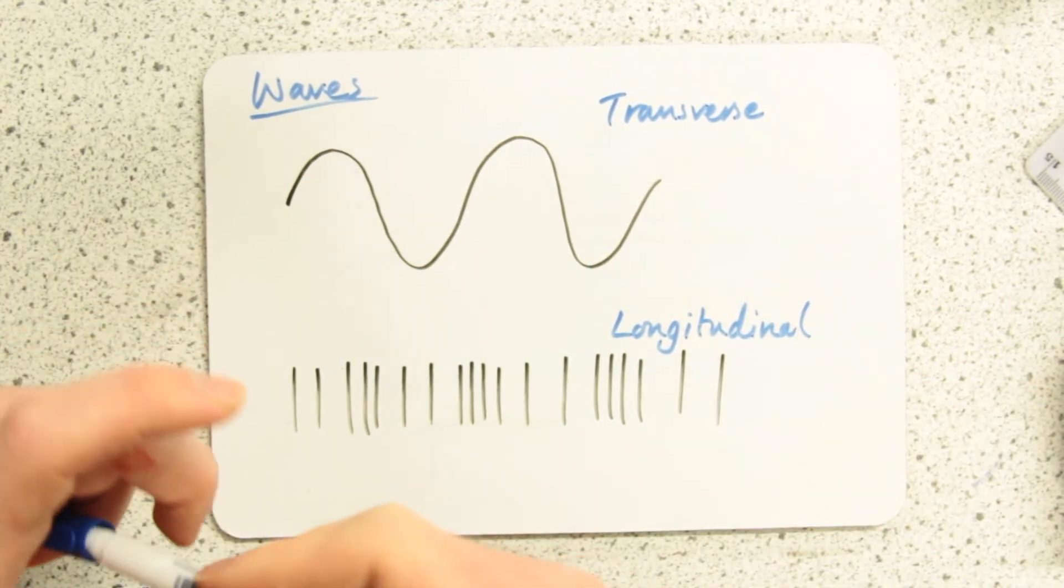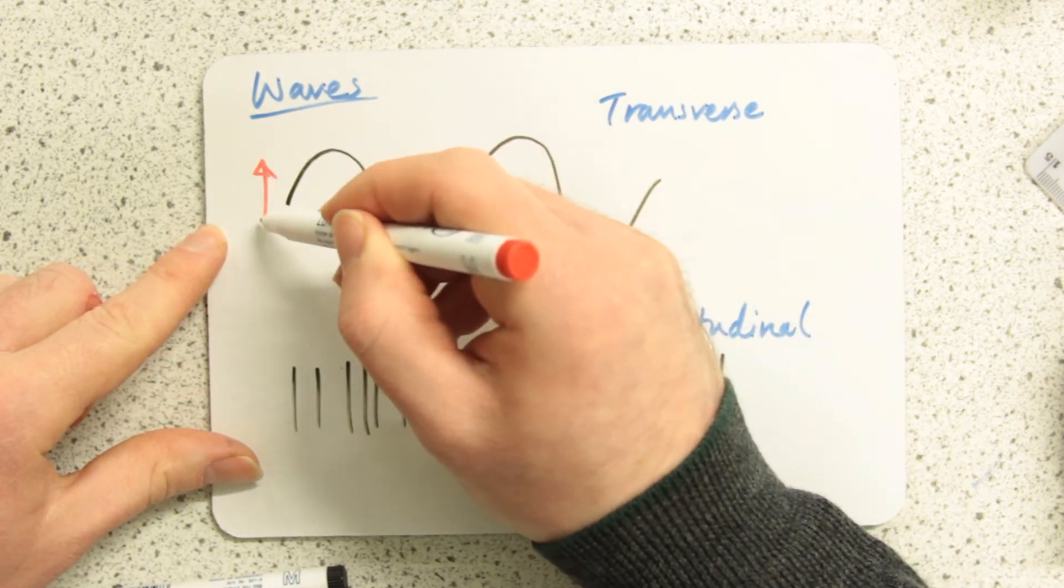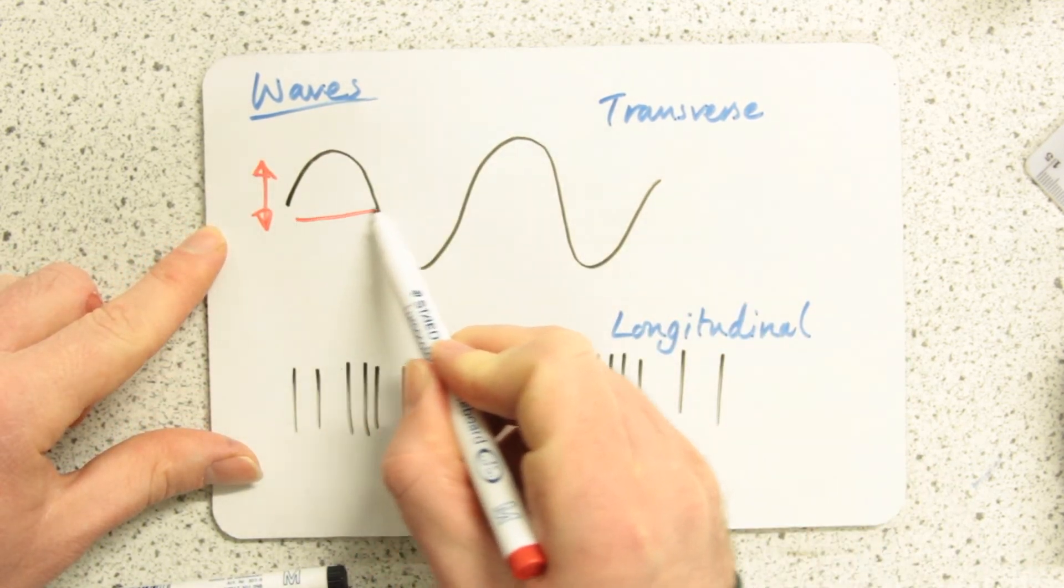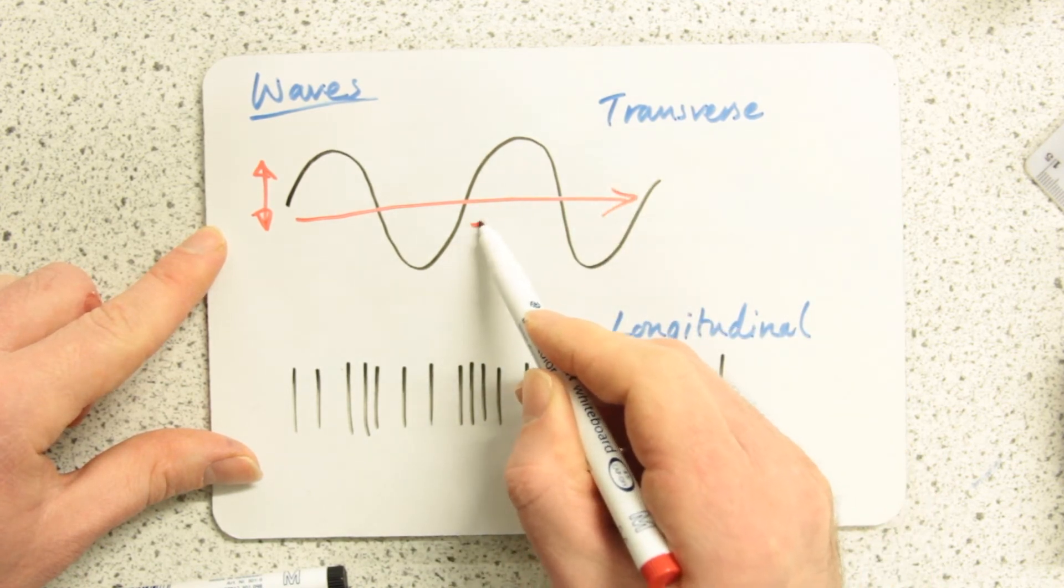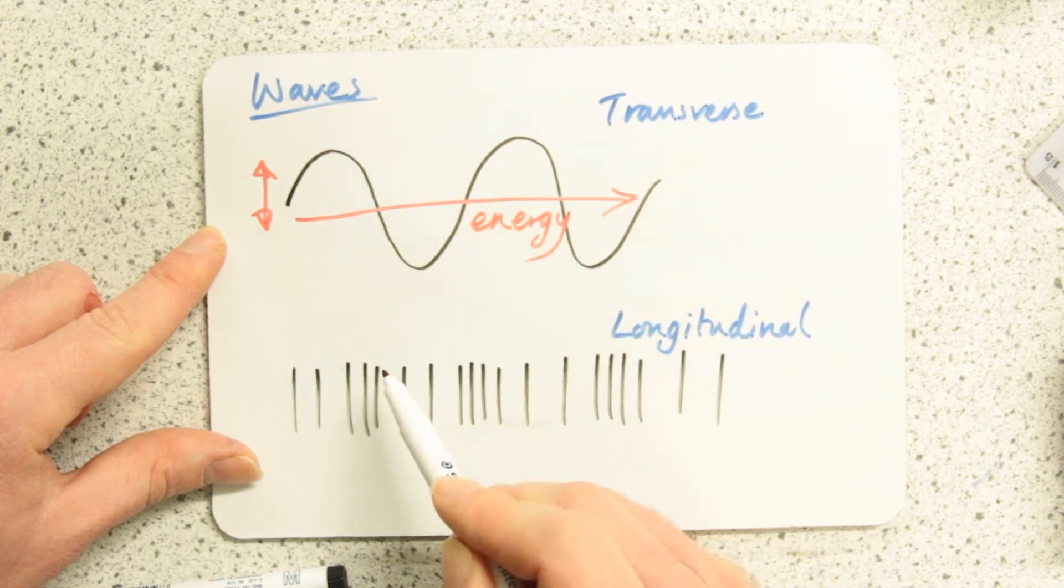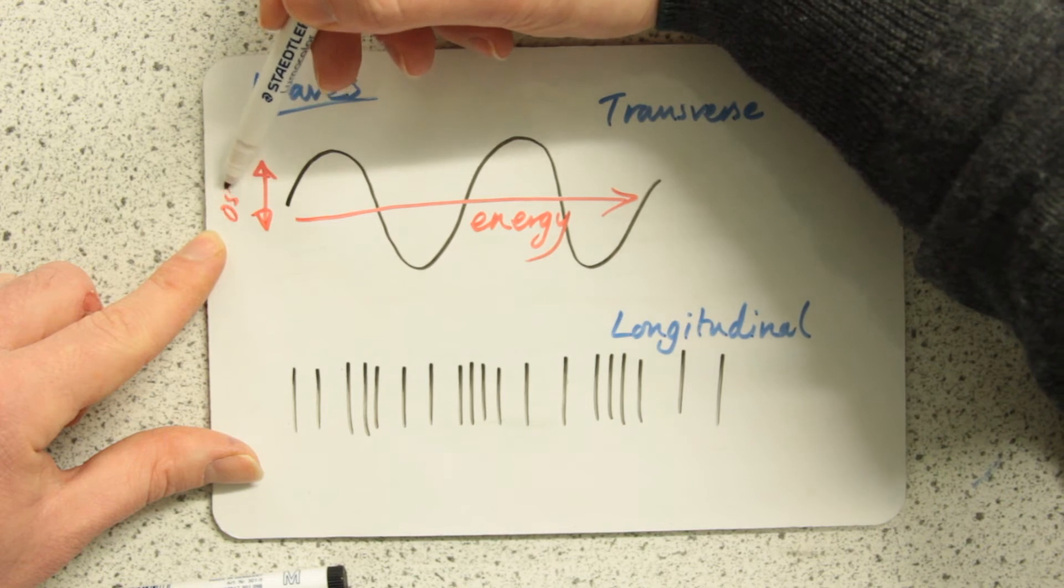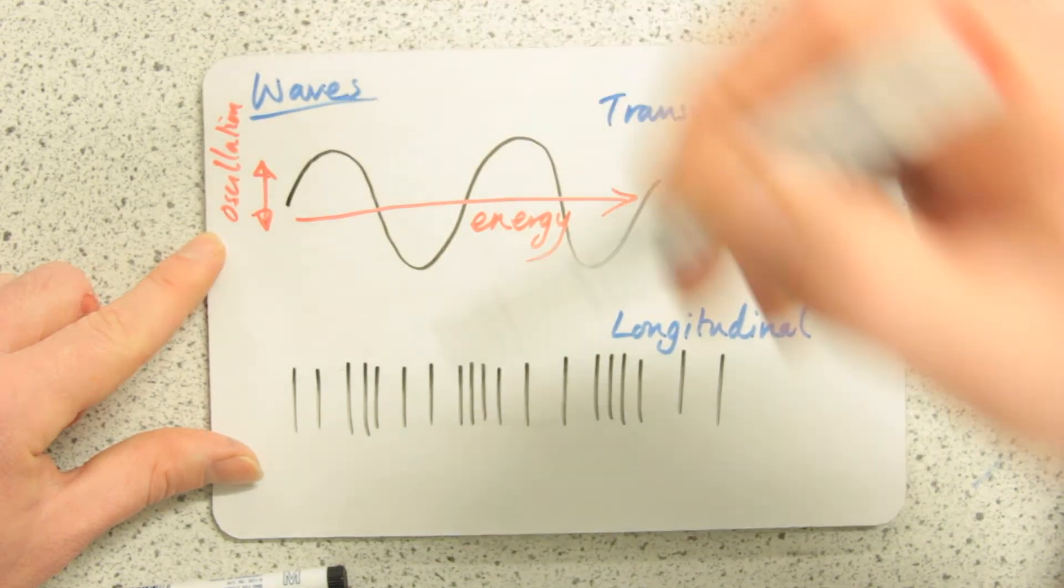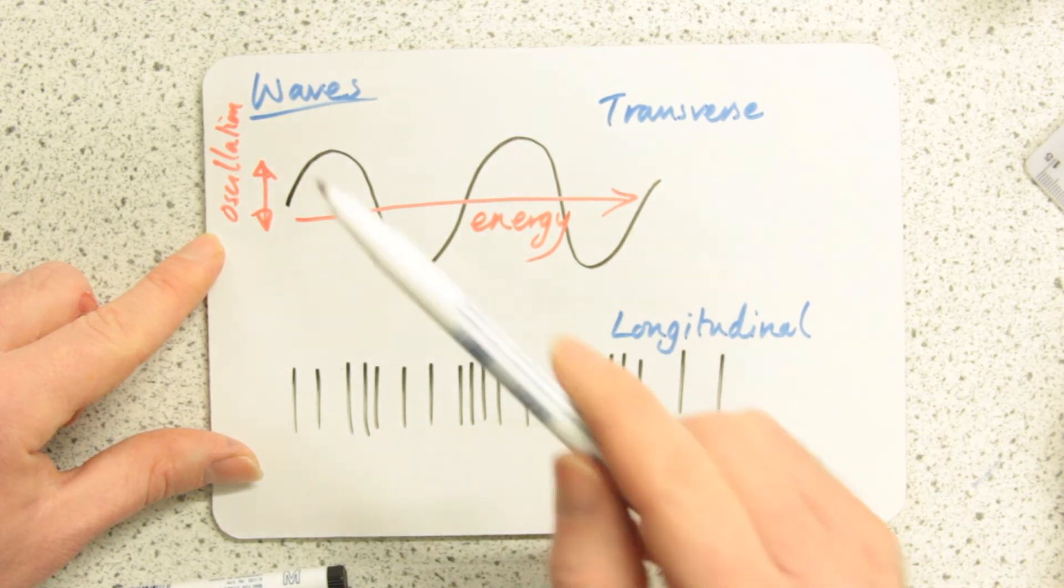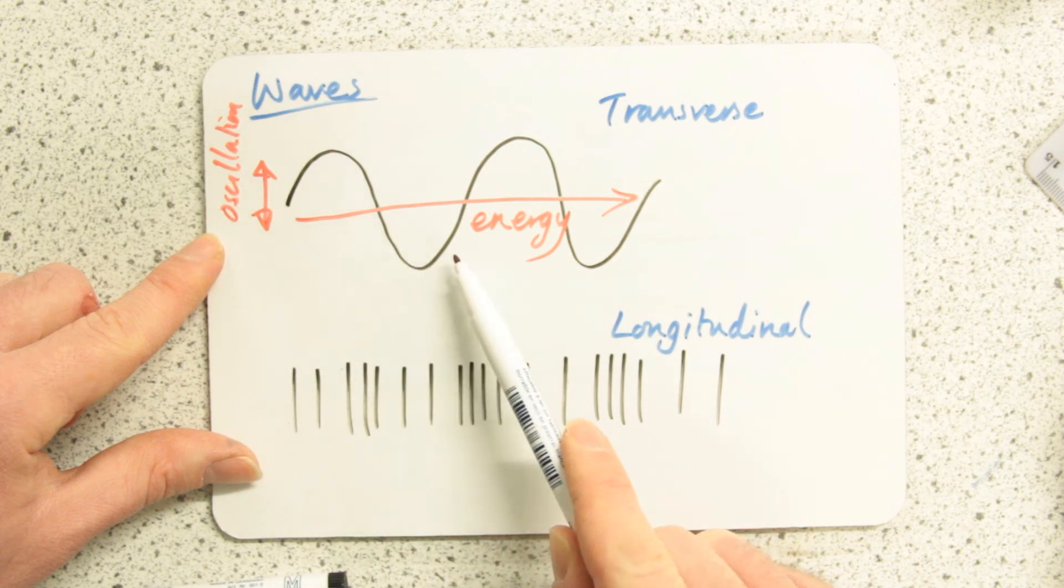Well, a transverse wave is oscillating at right angles to the direction of energy transfer. So the energy is going this way and the vibration or the oscillation is going at 90 degrees to that. We remember for a transverse wave the oscillation is at right angles to the direction of energy transfer or the vibration is perpendicular to the direction of energy transfer.